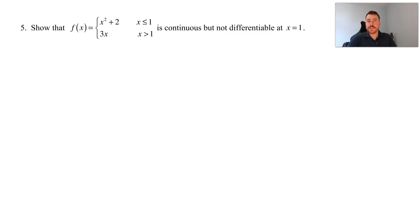Let's take a look at question number five. This one says to show that f of x, given this piecewise function, is continuous but not differentiable at x equals one.